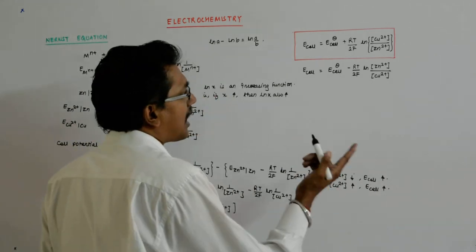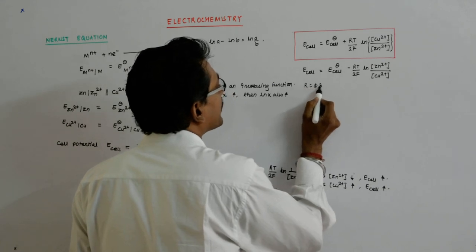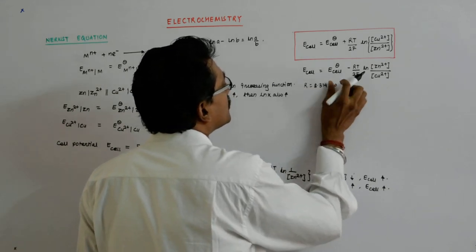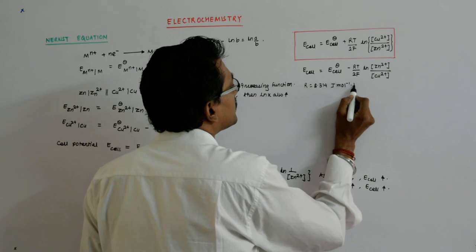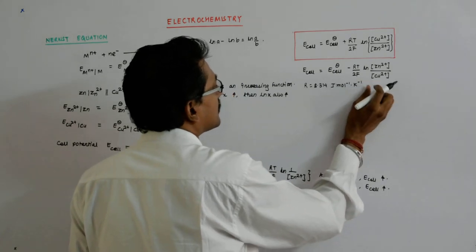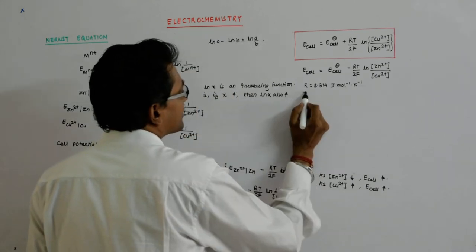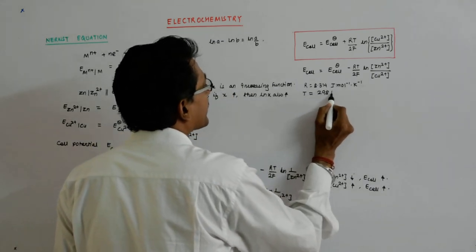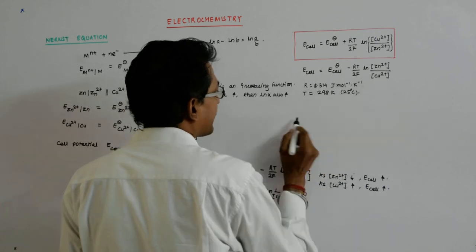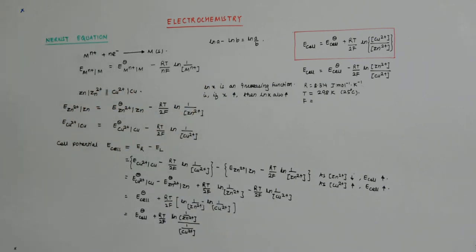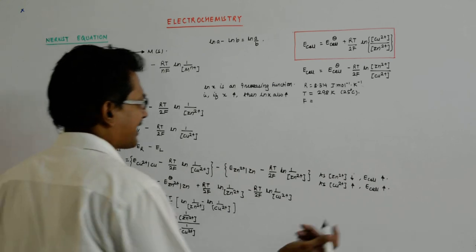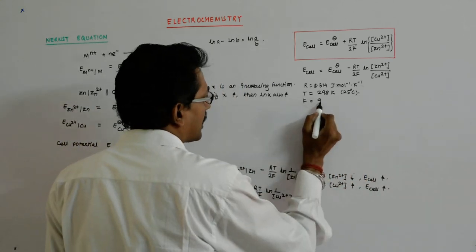R is equal to 8.314 joule per Kelvin. Take T as 298 K, which is nothing but 25 degrees Centigrade. And the value of Faraday's constant, which we had earlier calculated, is 96487.